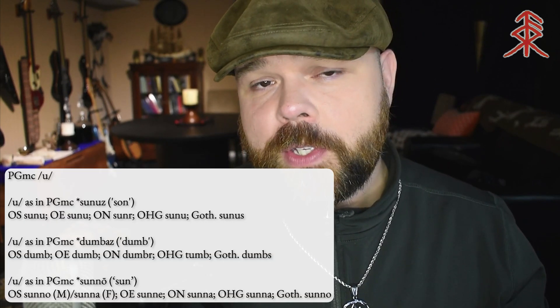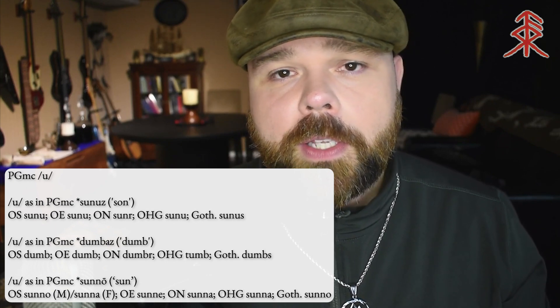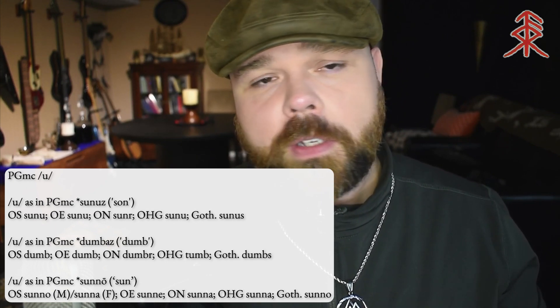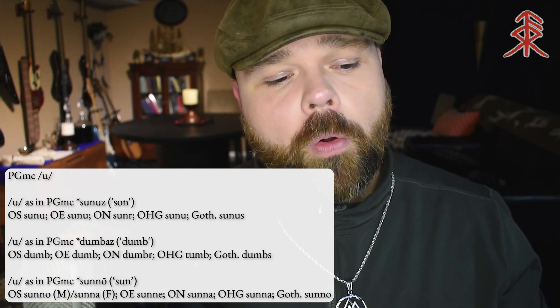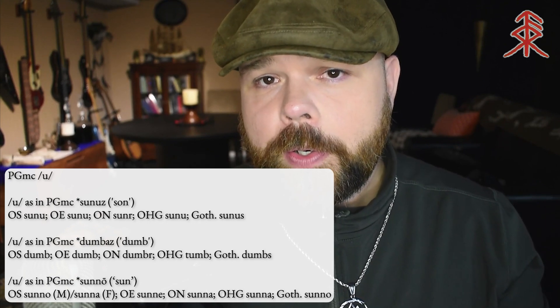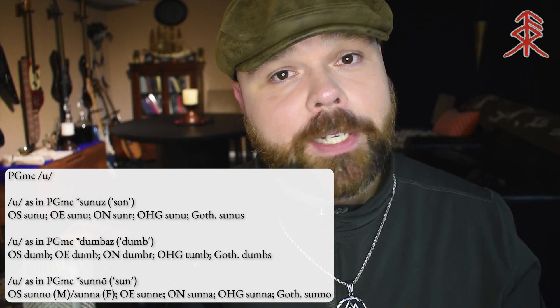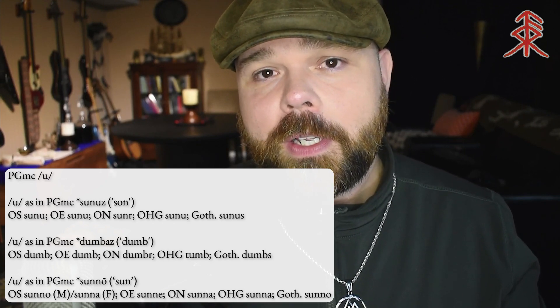All right, so the next one is going to be short U. This one's very simple — it pretty much just continues straight into the Germanic languages as a short U. The word I've provided is 'son' — *sunuz* — not *sonus*, but *sunuz*. Old Saxon: *sunu*. Old English: *sunu*. Old High German: *sunu*. Old Norse: *sonr*. And then Gothic: *sunus*. Pretty self-explanatory — we just reconstruct that short U because that's what the data shows across the board for this word.